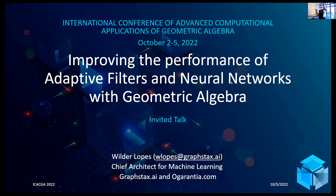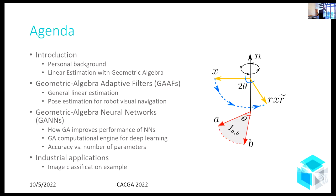I'm going to give you an overview about my background — how I got into geometric algebra, especially trying to apply it to linear estimation. Then I'll dig deeper into what I call geometric algebra adaptive filters, which is the title of my PhD dissertation that I defended in 2016. After that, how I changed gears and went into neural networks, and at the very end, a real industrial application where geometric algebra solved a problem for a big car manufacturer.